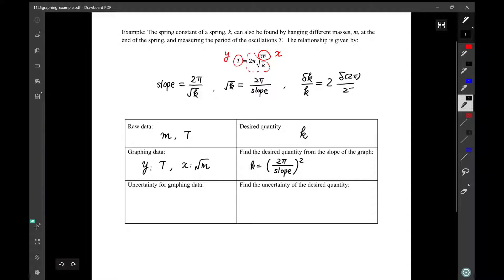And of course, δ(2π) is 0. So finally, our equation will be δk over k equals to 2 δ(slope) over slope. Once we know the slope and uncertainty of the slope from the graph, we would be able to calculate δk over k first, and then the absolute uncertainty δk.